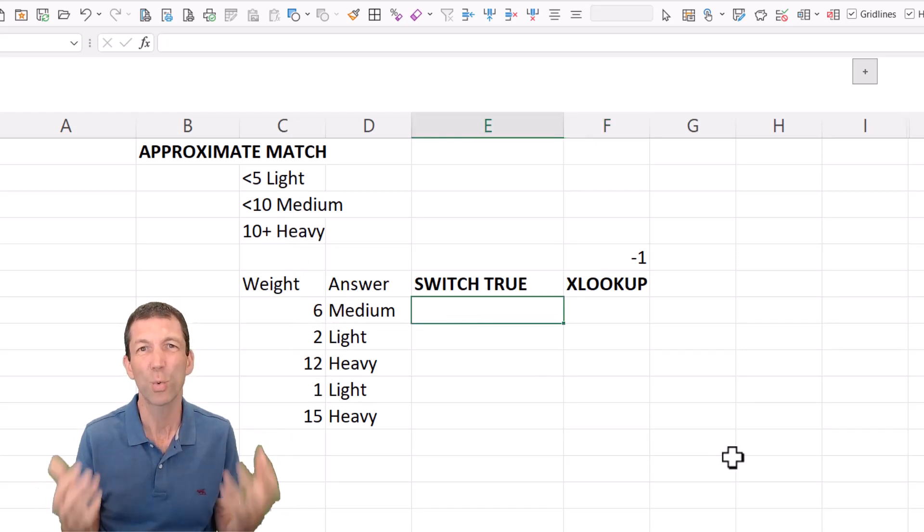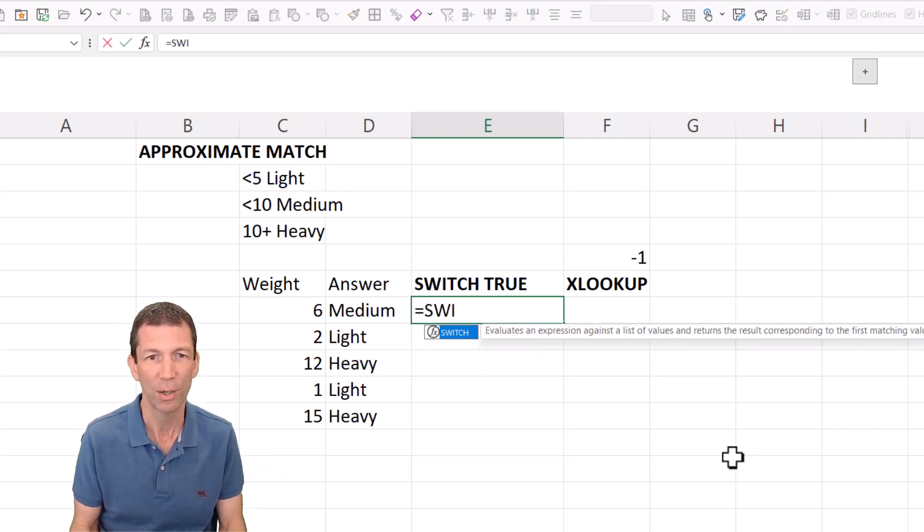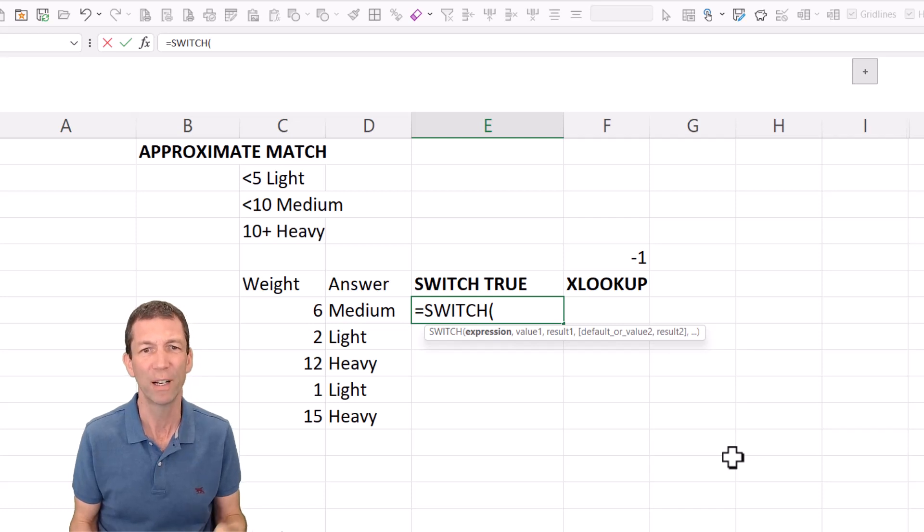And you can use the switch and true combination, and switch works in DAX, switch and true works in DAX as well as Excel, so it's really useful function to know about. Okay let's take a look, what's the switch true function? Well essentially if you're doing a standard switch it has to be an exact match, but if you want to do less than or greater than or those sorts of things you have to actually put a true in there.